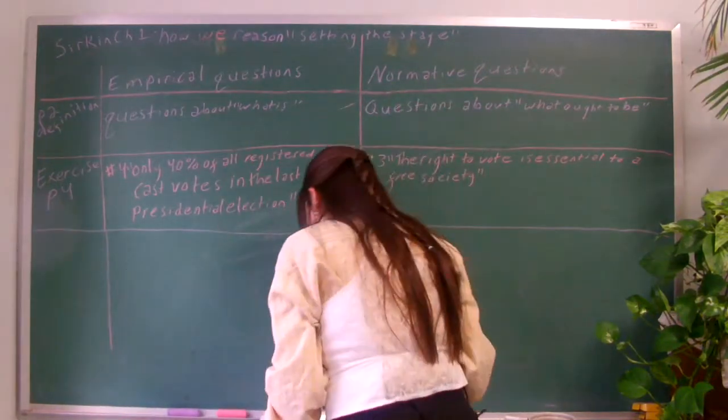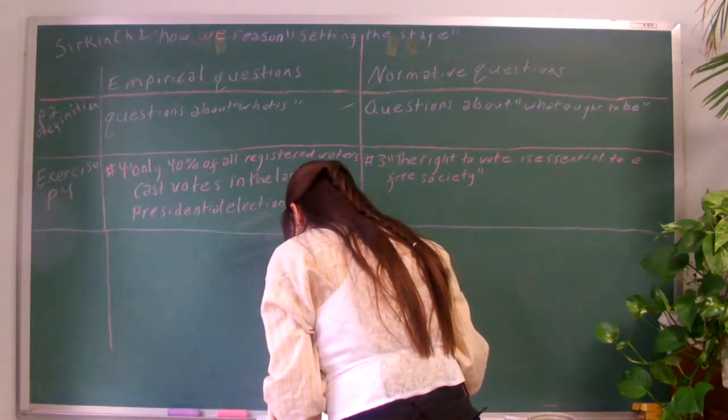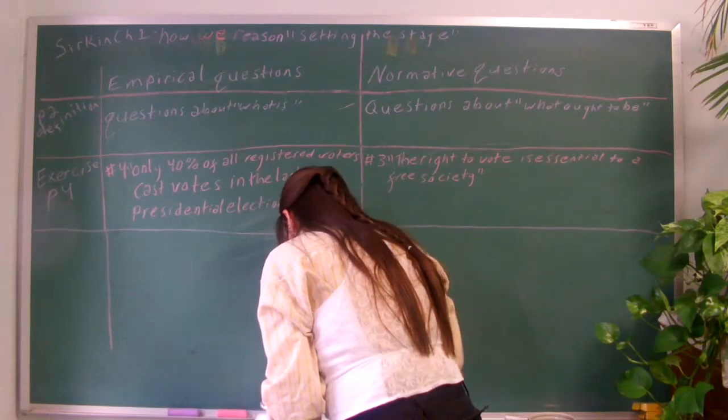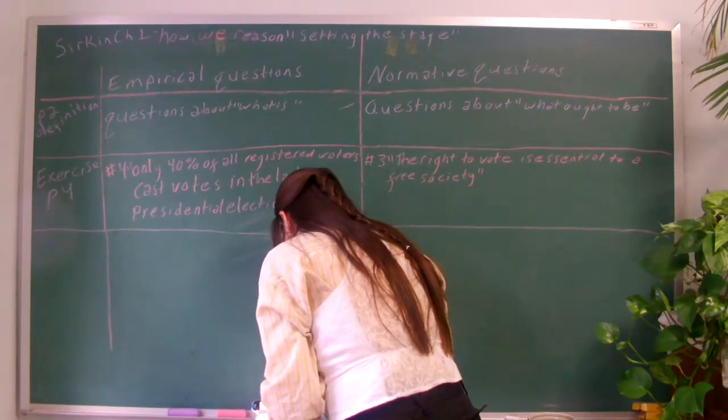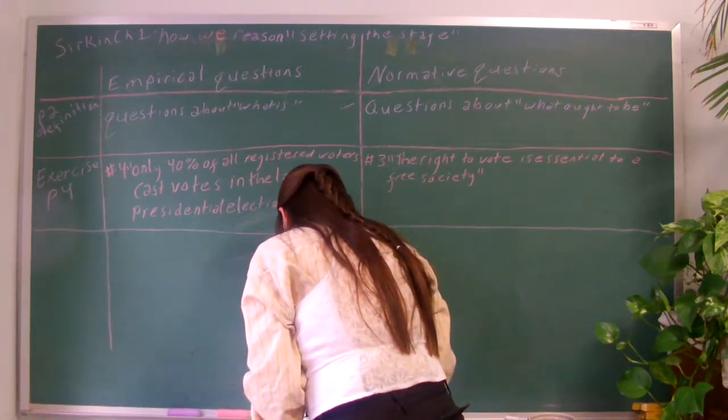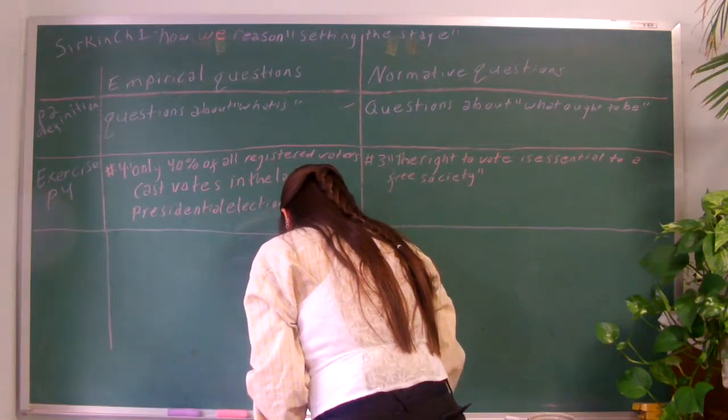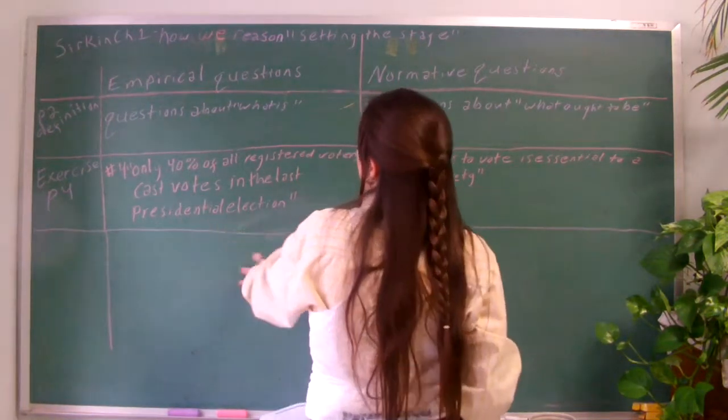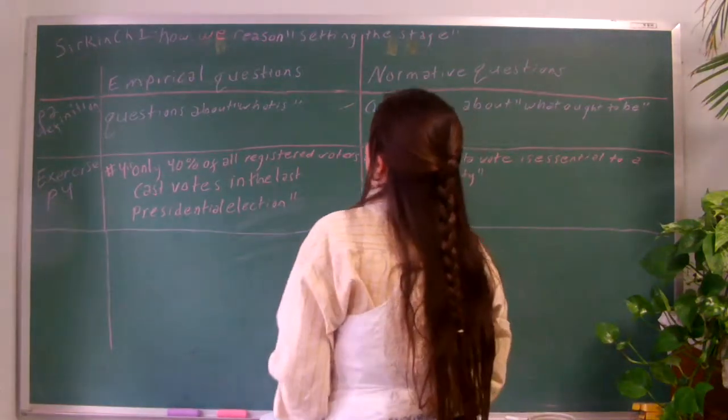An example of an empirical question is number 6. Last year, the rate of reported child abuse cases rose 3%. That would be an example of an empirical question.